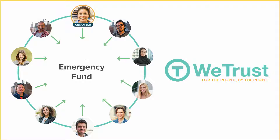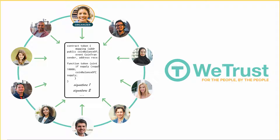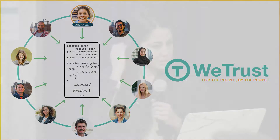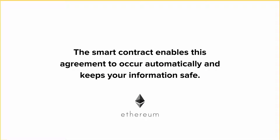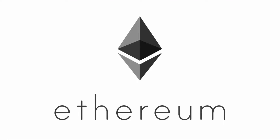Catherine hears about a new way to save and borrow money for emergency funds that's more fair, trustworthy, and lower cost. Rather than signing a contract with a third party that's a faceless, large entity that charges a lot of interest, she signs a smart contract on WeTrust's platform with nine of her colleagues. In this smart contract, each person in her group agrees that they can borrow or lend money to each other at fixed intervals, and each one contributes and withdraws from this shared fund according to the terms of their contract. With WeTrust, Catherine is able to borrow money when she needs it at a significantly lower cost than payday loans. The smart contract enables this agreement to accrue automatically and keeps your information safe — and all this is possible because of Ethereum.